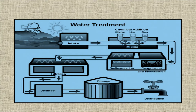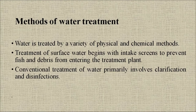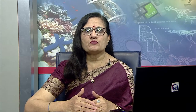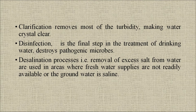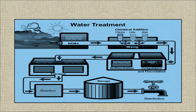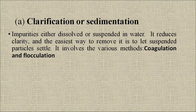Water is treated by a variety of physical and chemical methods. Treatment of surface water begins with intake screens to prevent fish and debris from entering the treatment plant. Conventional treatment primarily involves clarification and disinfection. Clarification removes most of the turbidity making water crystal clear, and disinfection removes pathogenic microbes. Desalination processes remove excess salt from water and are used in areas where fresh water supplies are not readily available or the groundwater is saline.